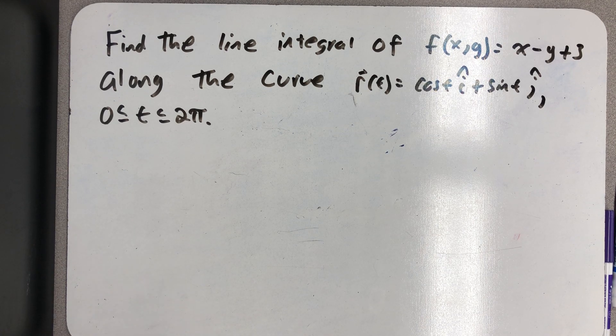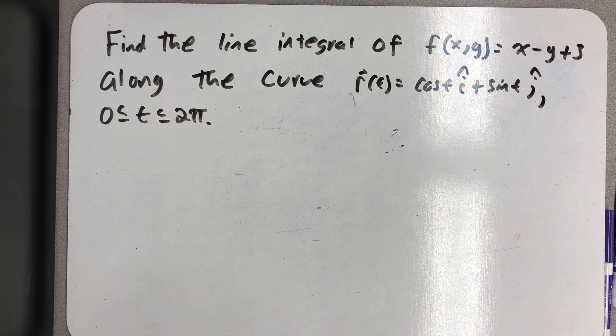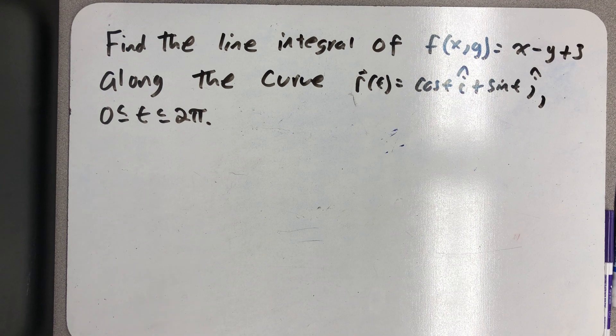Find the line integral of f(x,y) = x - y + 3 along the curve r(t) = cos(t)i + sin(t)j, where t is between 0 and 2π.